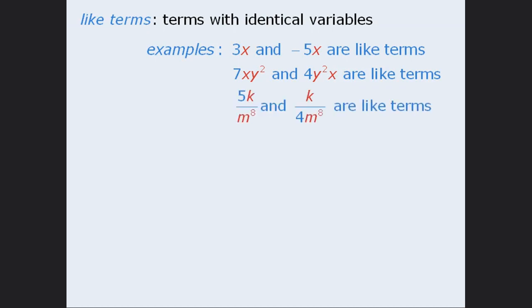We can also say that 5k over m to the power of 8 and k over 4m to the power of 8 are like terms because the variable portion in each term is k over m to the power of 8.